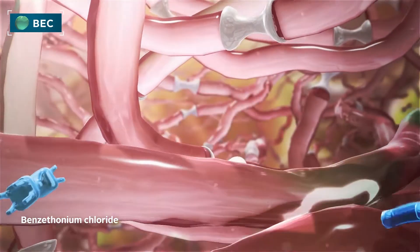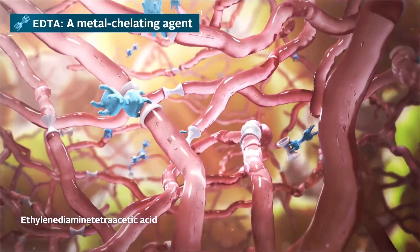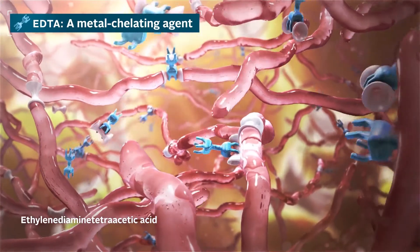EDTA is a metal chelating agent that selectively binds and removes the metal ions that hold the biofilm EPS matrix together, exposing microorganisms within.